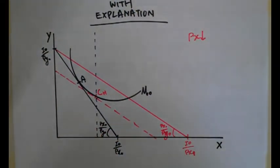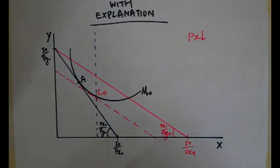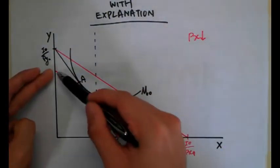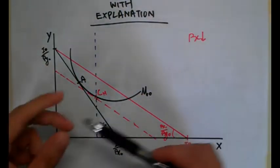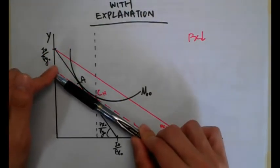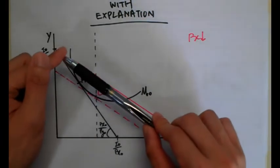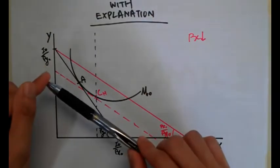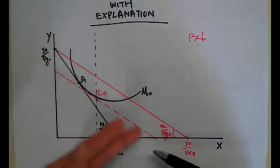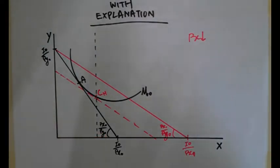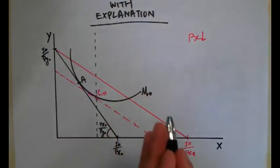Next, determine the change in real income. This is one portion we have not gone through in previous videos. To identify a change in the consumer's real income, we look at two things: number one, the new budget line; number two, the imaginary budget line. If the new budget line is higher than the imaginary budget line, there is an increase in real income. If the imaginary budget line is on top of the new budget line, the consumer's real income has decreased. In this case, the imaginary budget line is below the new budget line, therefore the consumer's real income has increased. Always compare imaginary to new — remember that.